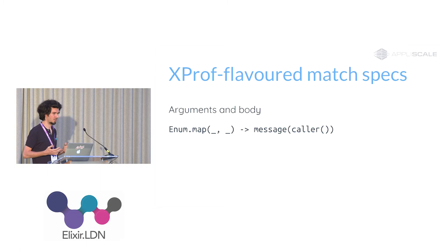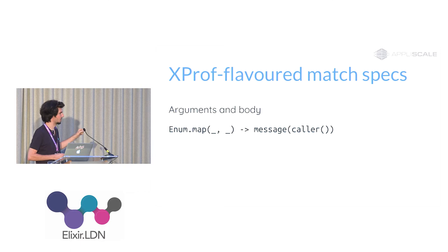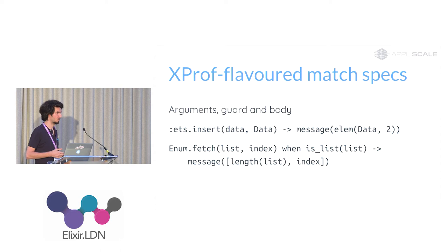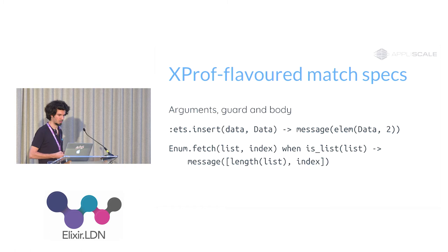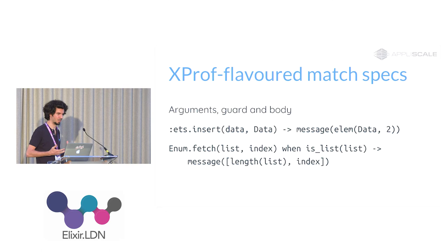That's very useful because this way you can cut some noise and really look at what you want. For example, you can capture who called the Enum.map function when it took too long, because Enum.map is a library function called in millions of places — so it's good to identify where it is called from. Another common pattern is capturing only part of the arguments, such as measuring ETS insert calls and capturing just the second field of the data structure instead of a huge tuple with non-interesting parts.